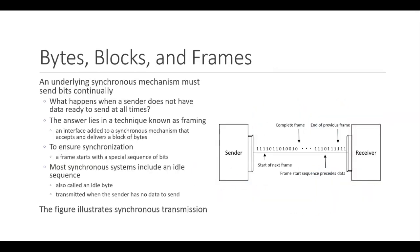If the underlying synchronous mechanism must send bits continually, what happens if the sender doesn't have data to send or isn't ready to send at all times? The answer lies in a technique known as framing. Framing is an interface added to a synchronous mechanism that accepts and delivers a block of bytes known as a frame. To ensure the sender and receiver stay synchronized, a frame starts with a special sequence of bits.